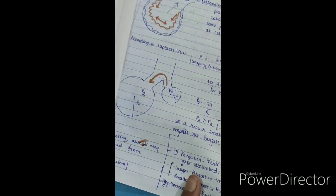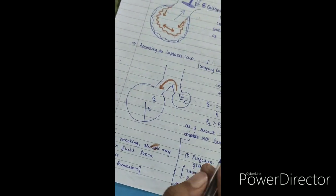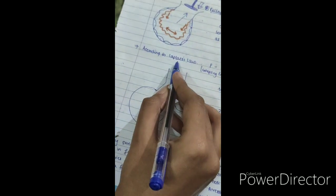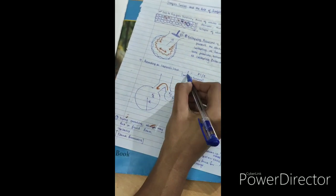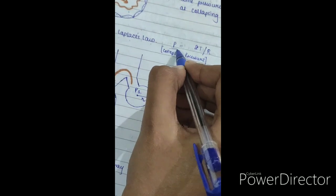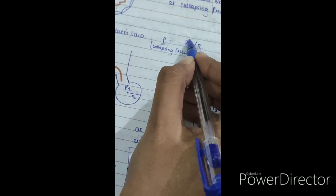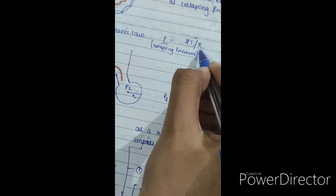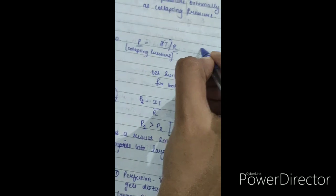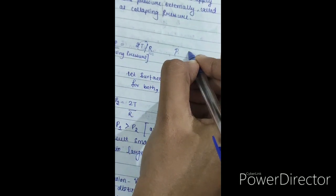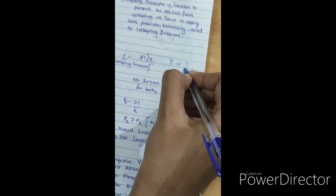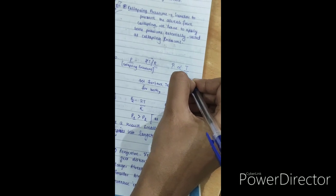According to the Laplace law, it states that the collapsing pressure is directly proportional to the surface tension and inversely proportional to the radius. So collapsing pressure is directly proportional to surface tension and inversely proportional to the radius of the alveoli.